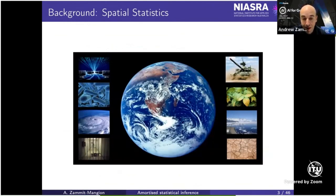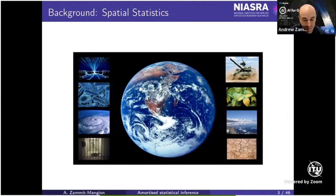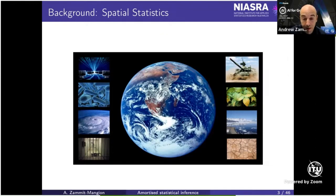Essentially, you get a dataset which is spatial or spatial-temporal, and you either need to fit a model to estimate interpretable parameters, or you want to forecast, or both. This has applications in conflict prediction, sea level rise prediction, and a recent project with NASA on predicting carbon dioxide sinks and sources and estimating fluxes from satellite data — all involving big spatial or spatial-temporal datasets requiring statistical analysis.